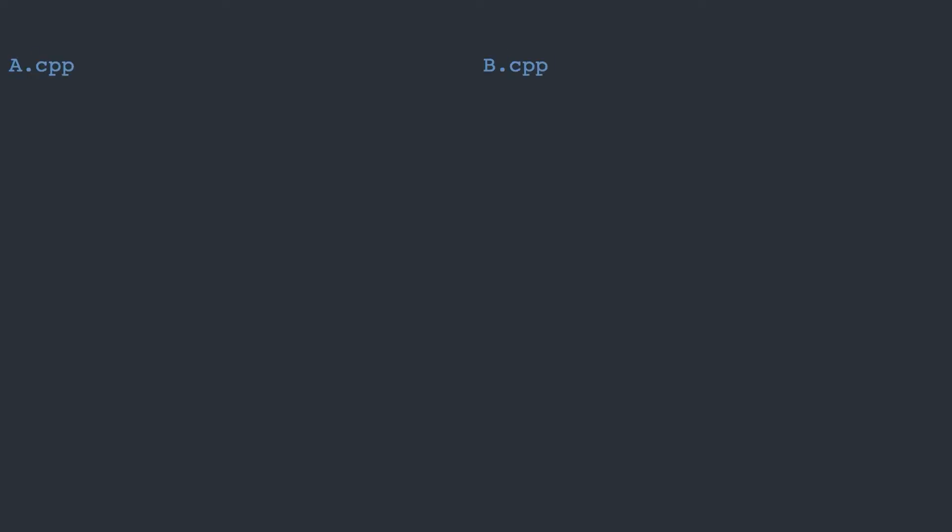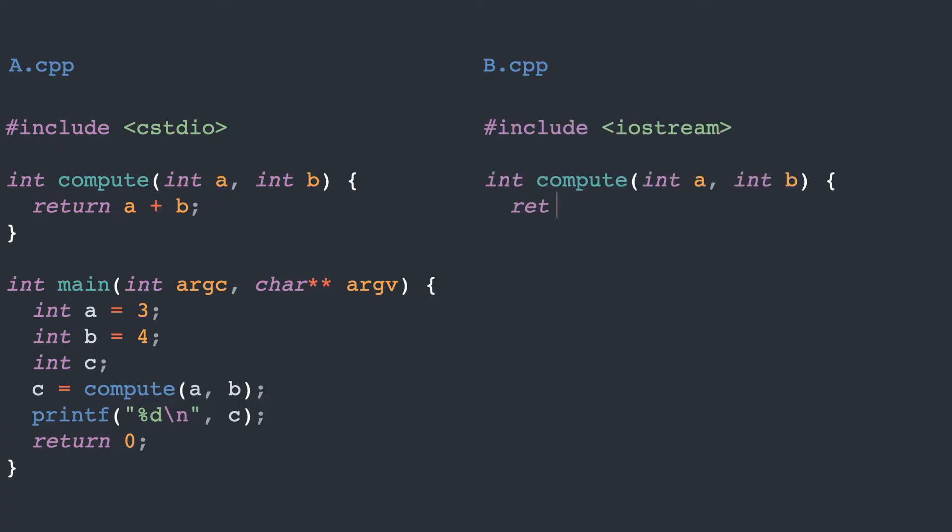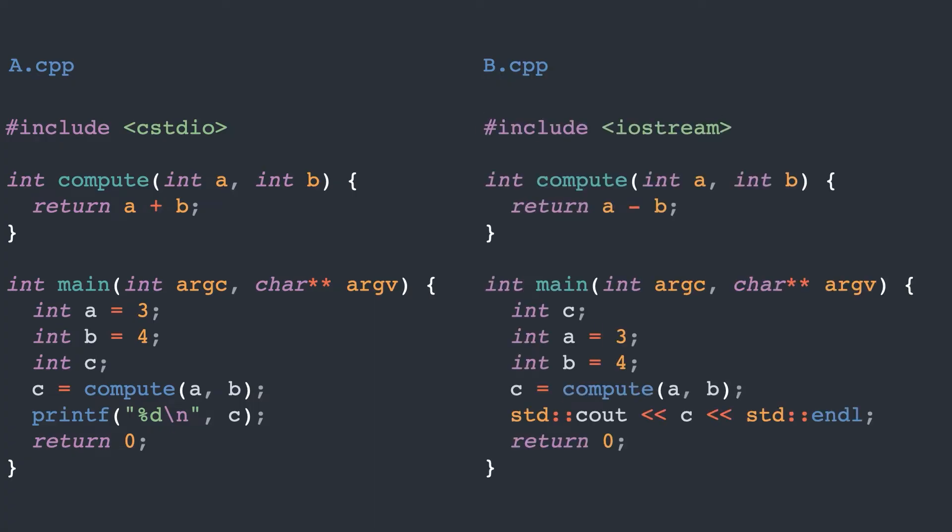You are given two text files, A and B. Your task is to find differences between them. Specifically, we want to find the smallest number of lines to remove from and add to file A to match the contents of file B. But before we solve this problem, let's start with a more basic task.